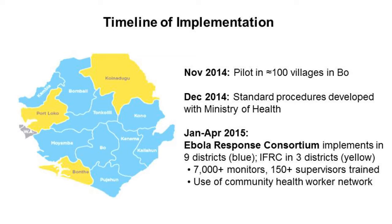Regarding the implementation timeline: in November 2014, we conducted a pilot in around 100 villages in Bo District. In December 2014, we developed a standard operating procedure for the Ministry of Health, who asked us to scale the program nationally. From January to April, it was scaled up nationally by the Ebola Response Consortium — an alliance of NGOs led by IRC — to implement Ebola response programming in a standardized way. Three additional districts were scaled up by IFRC using very similar SOPs. In total, we trained over 7,000 community health monitors and 150 supervisors across nine districts, many of whom were pre-existing community health workers.